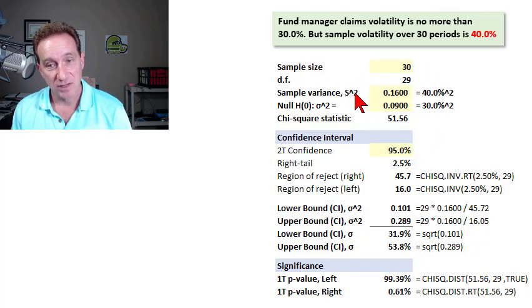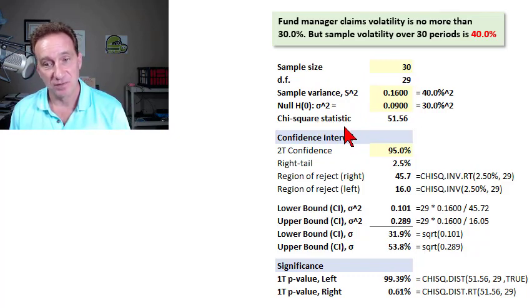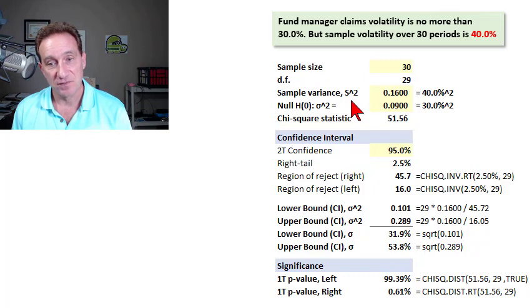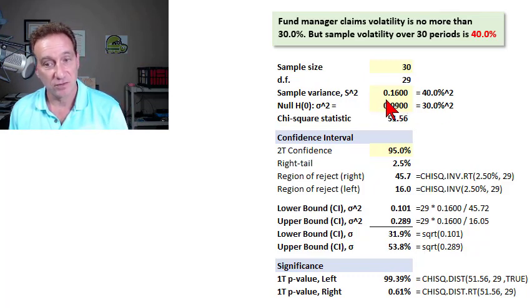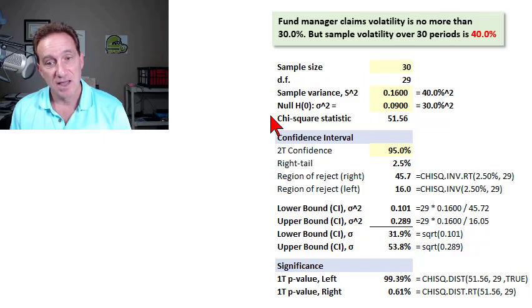As inputs here, I have the variances, because the chi-square statistic is a test of the sample variance. Our sample variance is 40% squared or 0.16. That's what we observe. And our null hypothesis is the 30% squared. That's 0.090.